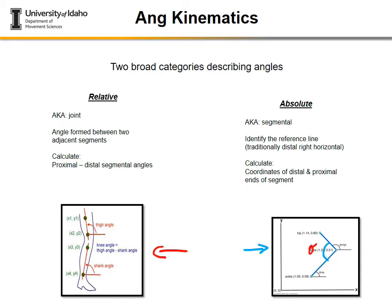These two types — relative and absolute or joint versus segmental — describe the same motion differently. A critical concept is that you can have the same knee joint angle while the thigh and shank are in completely different positions in space. Depending on your research question and task, it may be more beneficial to use the segmental angles of the thigh and shank rather than the knee joint angle alone. The question dictates which type of angular kinematics to use.